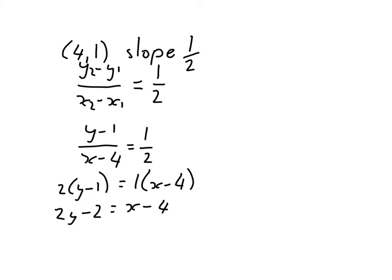For example, I'll get the x and y on one side, so minus x plus 2y equals minus 2, which becomes plus 2 because I'm putting it on the other side. So it becomes minus 4 plus 2, which is minus 2.